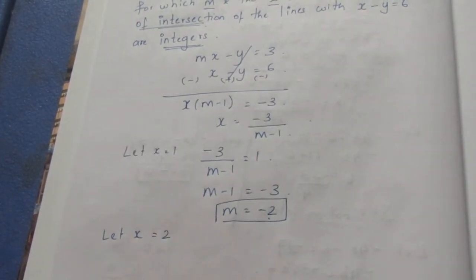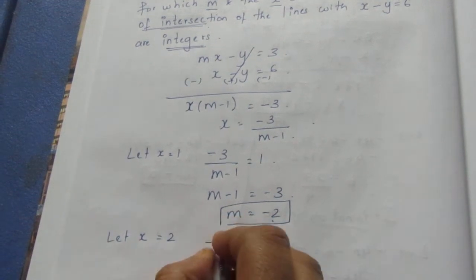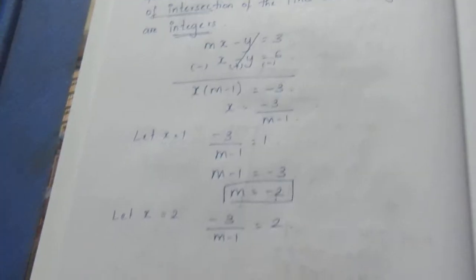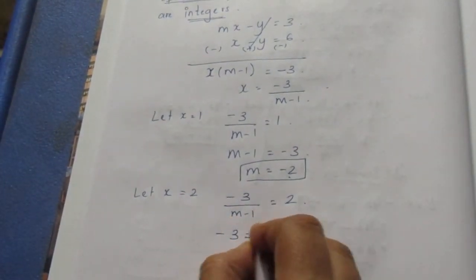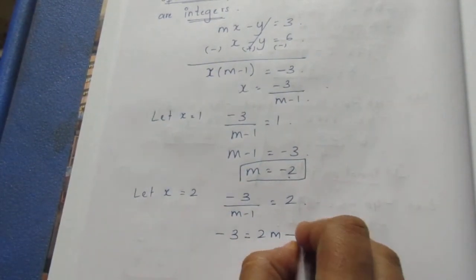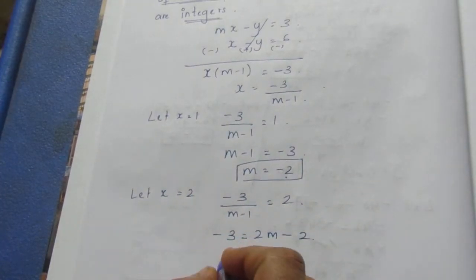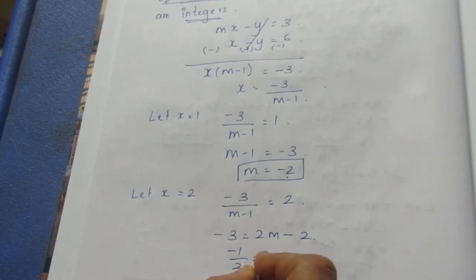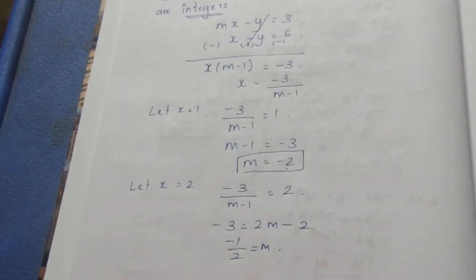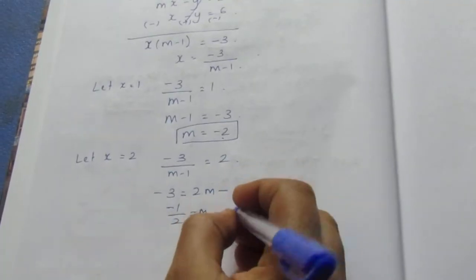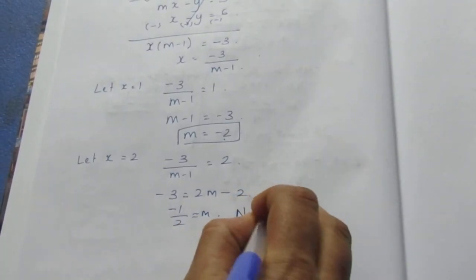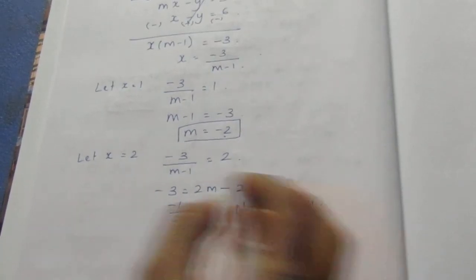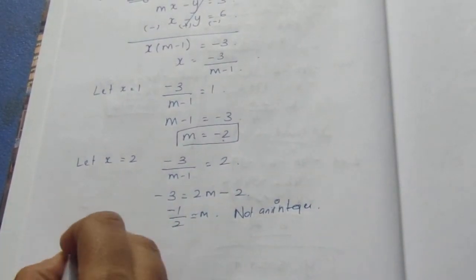Let x = 2. Then -3/(m - 1) = 2, so -3 = 2m - 2, giving m = -1/2. Since m = -1/2 is not an integer, we cannot use this value.